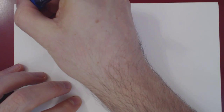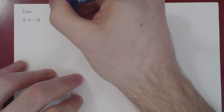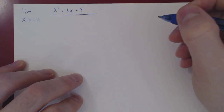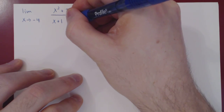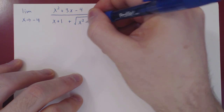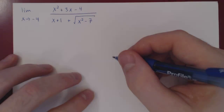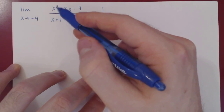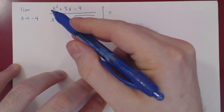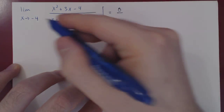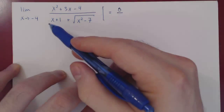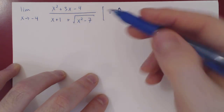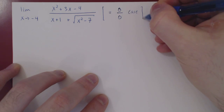Let's consider the limit as x approaches negative 4 of x squared plus 3x minus 4, over x plus 1 plus the square root of x squared minus 7. As always, we consider what kind of case we're dealing with. Negative 4 squared is 16, 3 times negative 4 is negative 12, 16 minus 12 is 4, minus 4 is 0. So as x approaches negative 4, the numerator shrinks to 0. Negative 4 plus 1 is negative 3. Negative 4 squared is 16 minus 7 is 9, root of 9 is 3. Negative 3 plus 3 is also 0. So we have an indeterminate case of 0 over 0.